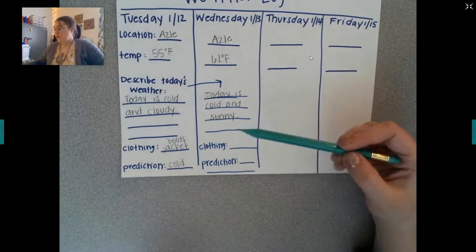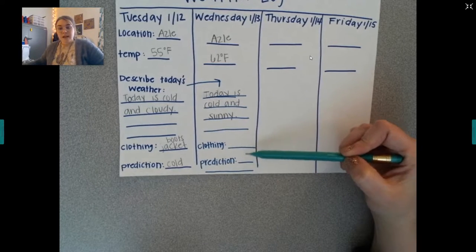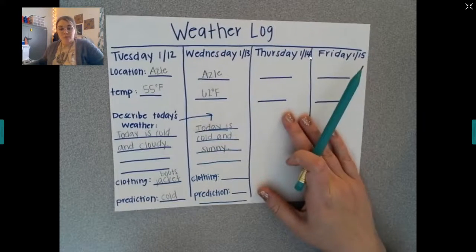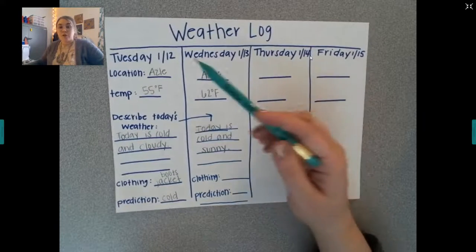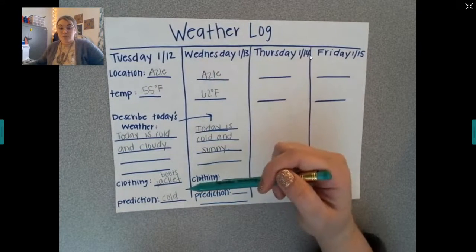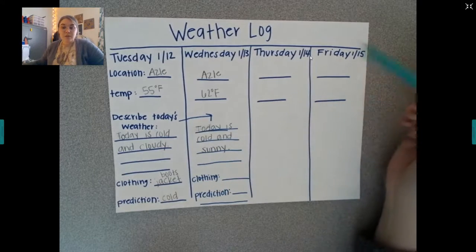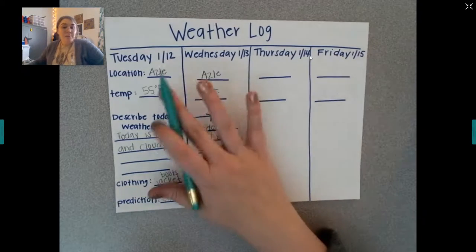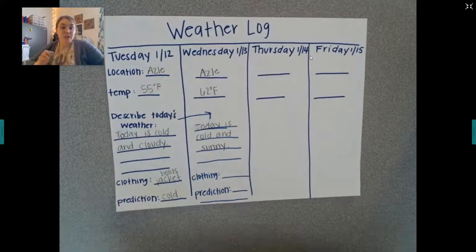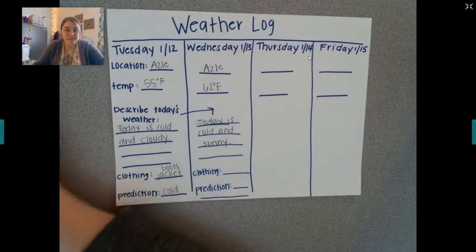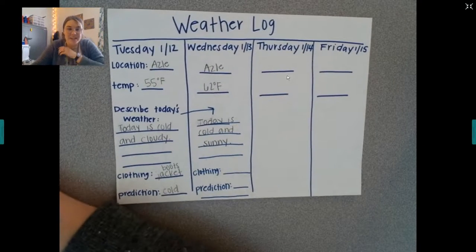When you finish writing what clothing you should wear today and what your prediction is, I want you to take a picture of your weather log. Your Tuesday should be completely filled out and your Wednesday should be completely filled out — Thursday and Friday should be blank. Take a picture of this and turn it in because I want to make sure everybody is doing a weather log. Take a picture of your weather log for Wednesday and turn it in.